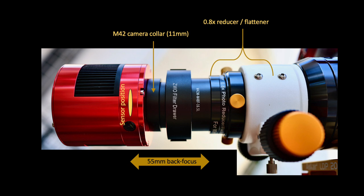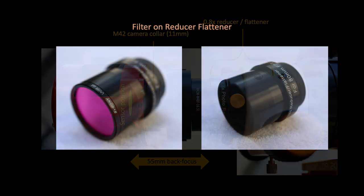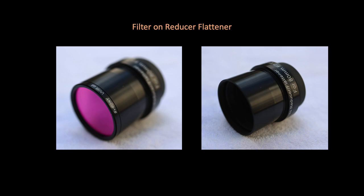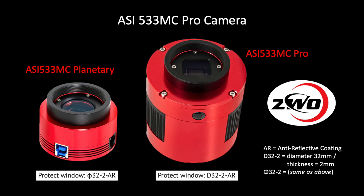Most of the data I will show you comes from screwing the filters into the front end of the reducer flattener. I also included a little data when using the filter in the filter drawer as a brief comparison. The ASI 533MC camera, like all ZWO imaging cameras, has a glass protection window in front of the CMOS sensor. I contacted ZWO customer service and learned that AR stands for anti-reflective coating and the glass is transparent to both UV and IR light — it is not a filter.